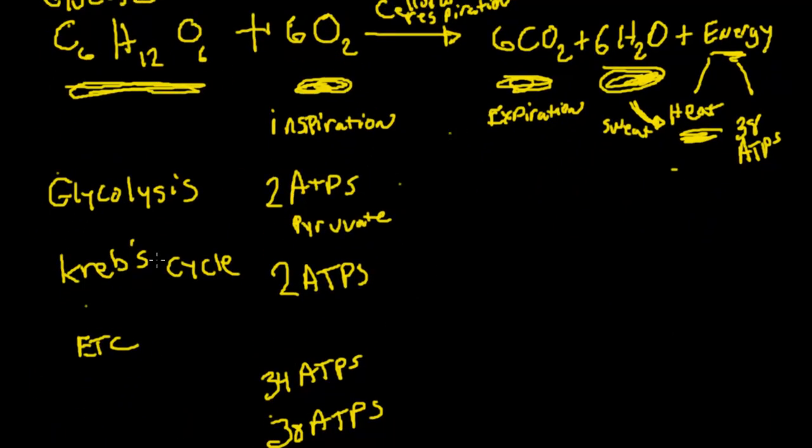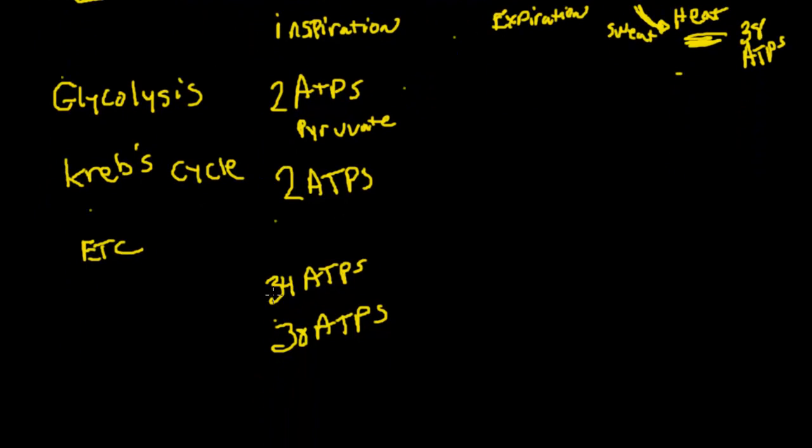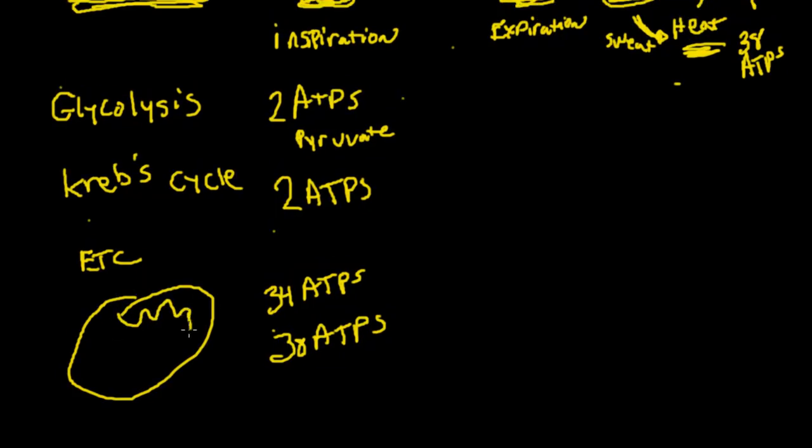This is where it happened. We got two of those ATPs from glycolysis that started us off. We got two ATPs from the Krebs cycle. And then we got about 34 ATPs from the electron transport chain. And this happens out in the mitochondria, which we will talk about later.